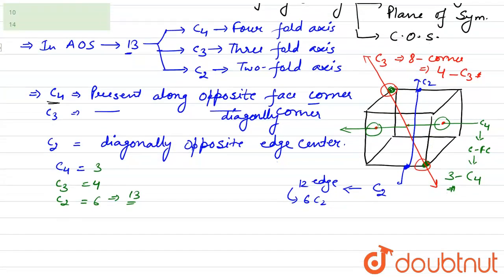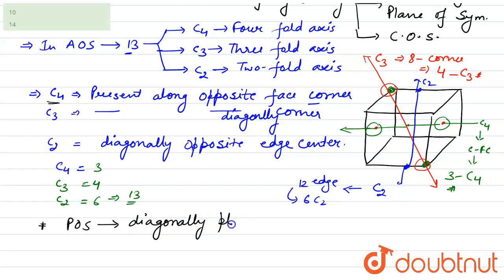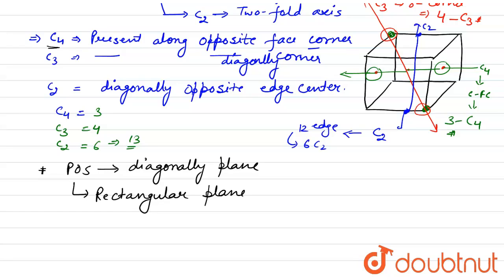Now let's talk about the plane of symmetry. Planes of symmetry are of two types: one is the diagonal plane and one is the rectangular plane. Let's make another cube and we will see them one by one. The diagonal plane is present along diagonally opposite corners.